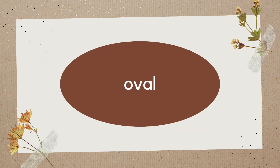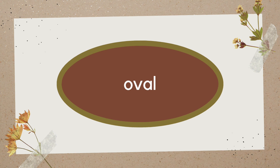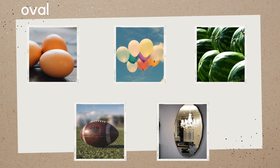This is an oval. An oval has one side. Here are examples of an oval: an egg, a balloon, a watermelon, a football, and a mirror.